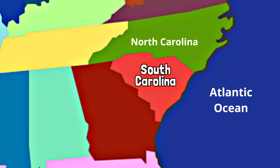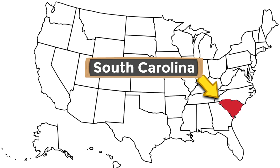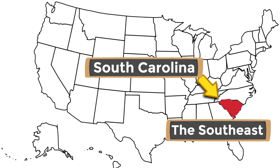There are only two states that border South Carolina. There's North Carolina to the north, which makes sense — north of South Carolina. And then the state of Georgia is to the west and to the south. Georgia is pretty huge — it covers both the west and the south. So there are only two states bordering South Carolina: North Carolina and Georgia.